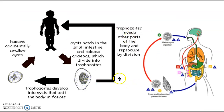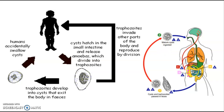From this diagram, the mature cyst is ingested through contaminated food or water. The cyst enters your stomach and then travels into the small intestine, where it releases trophozoites. The trophozoites then divide by binary fission and produce more cysts.